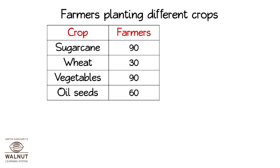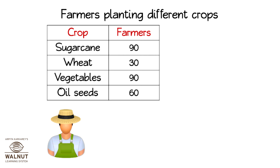Look at the first entry. It is of sugar cane and we can see 90 farmers. Having 90 farmer pictures is not a good idea — it's too many pictures and it's difficult to count too. So we can decide that one picture would represent more than one farmer.